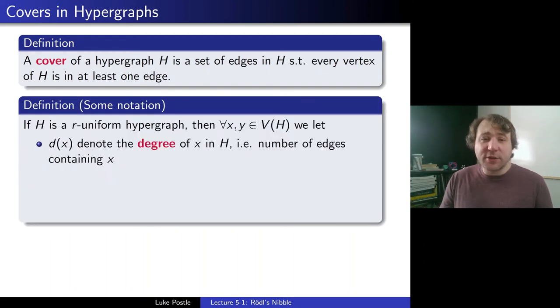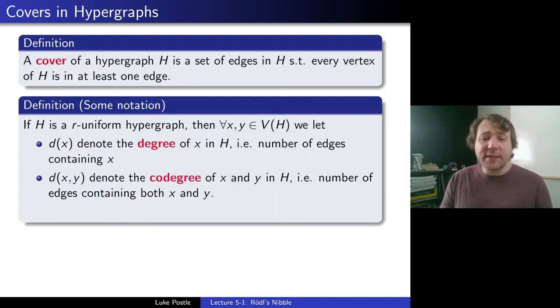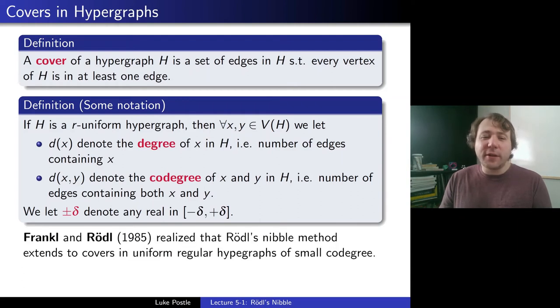And that's where the names covering number and packing number come from, and here's just some notation. We're going to say for our proofs and statements of theorems, that if you have an r-uniform hypergraph, we're going to let d(x) denote the degree of x, that's the number of edges containing x, and d(x,y) be the so-called co-degree of x and y in H, which is the number of edges containing both x and y. And I'm going to let ±δ denote any real number in [-δ, +δ].